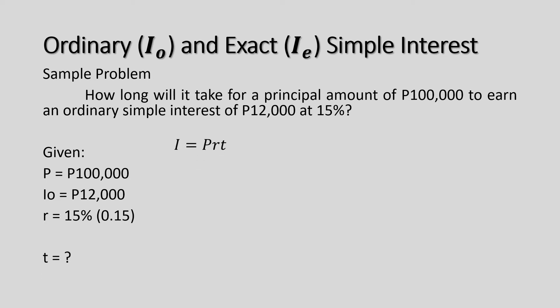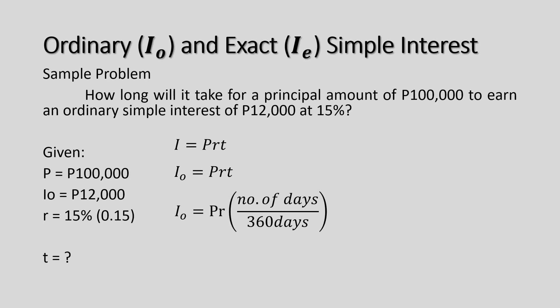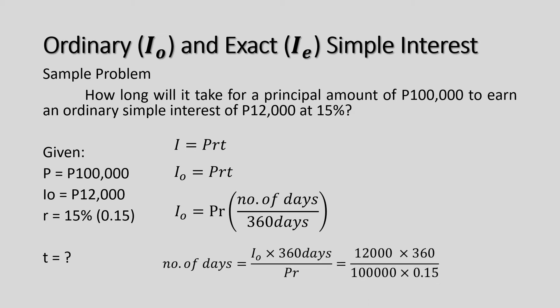For ordinary simple interest, I_O equals P times R times the number of days divided by 360. From this formula, we can derive the number of days as: number of days equals I_O times 360 divided by P times R.